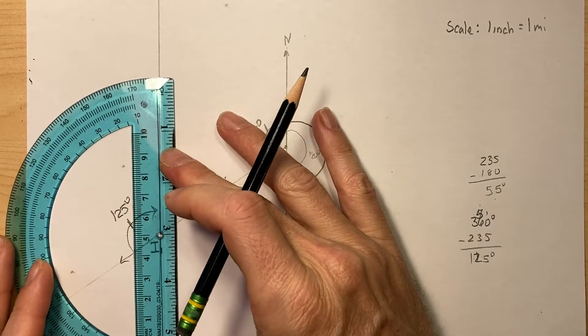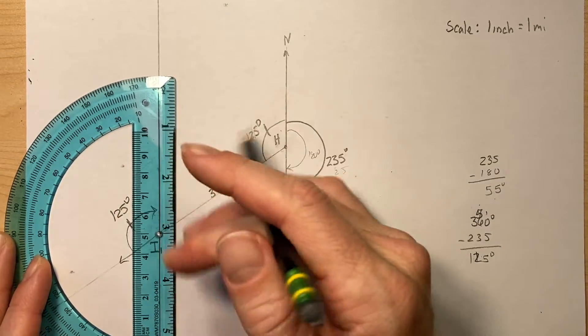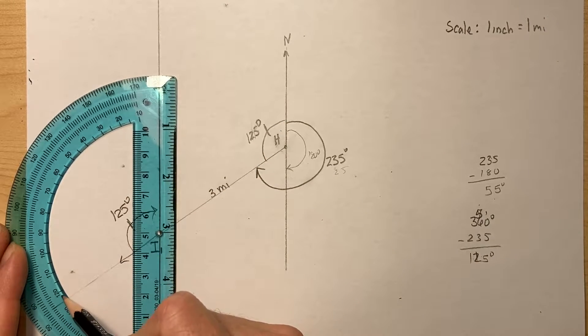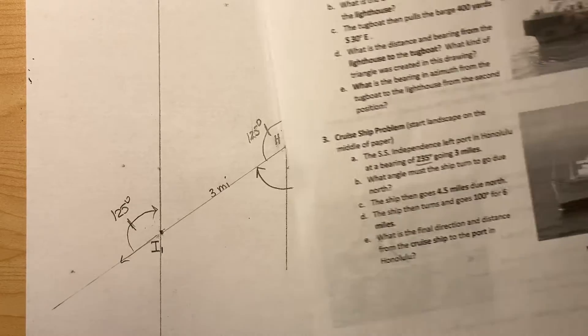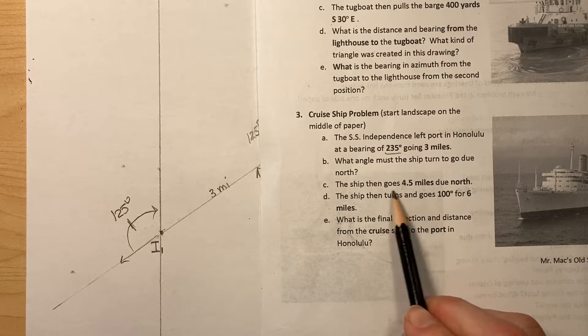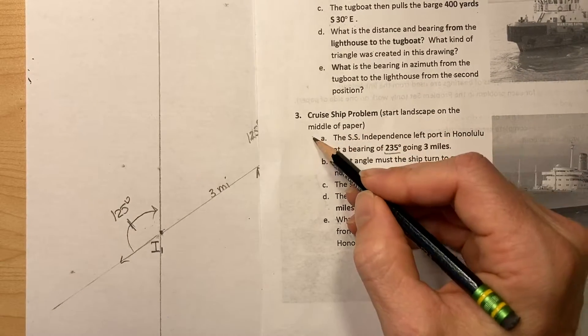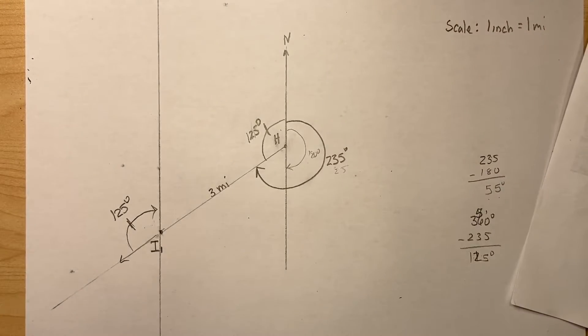It should be. We can measure it. And yeah, 125 right here. Okay, so it's going to go four and a half miles due north. So we just did the first two. Now the ship's going to go four and a half miles due north.